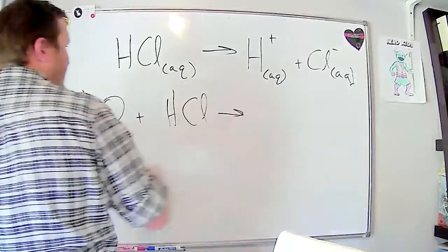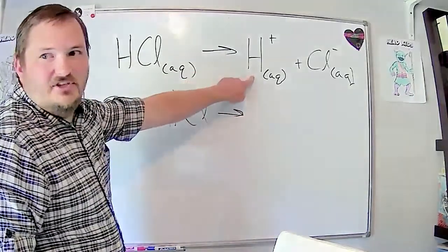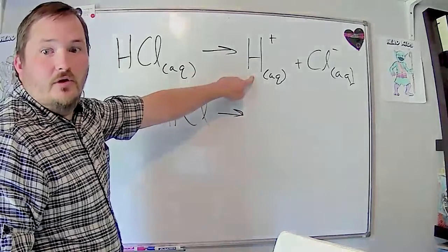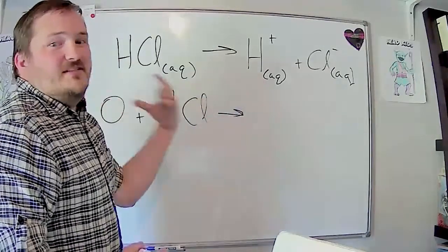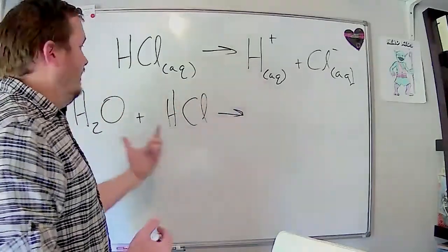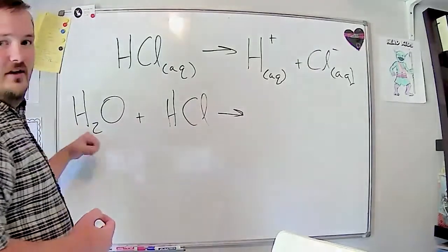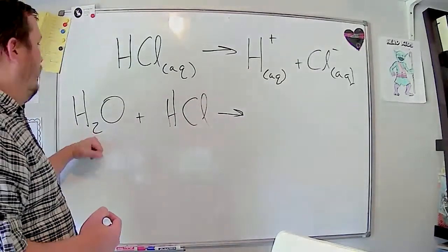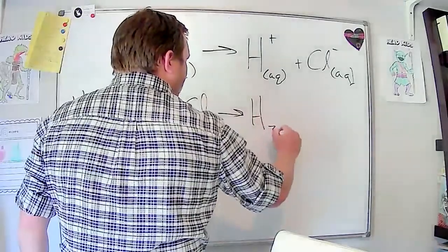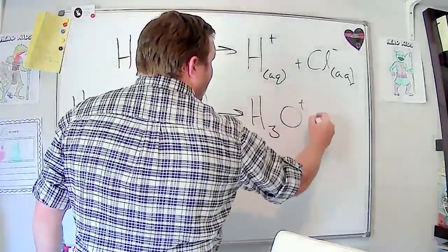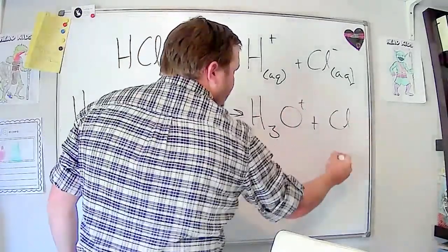Instead of making just H pluses, turns out H pluses don't like to just float around on their own. We need a base to accept the H+. And so if water is all you have floating around, water is going to act as the base. So what you actually make is H3O+ and chloride.